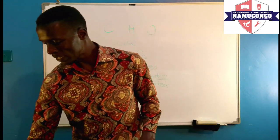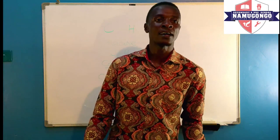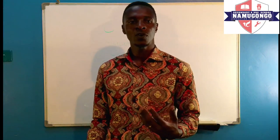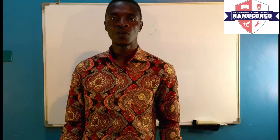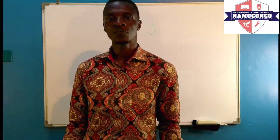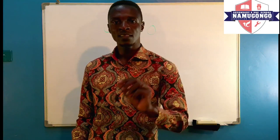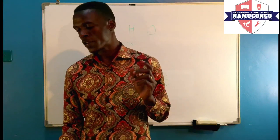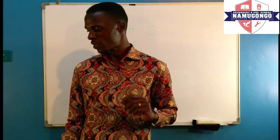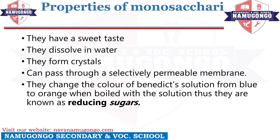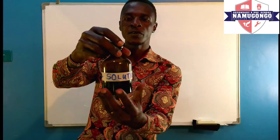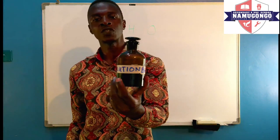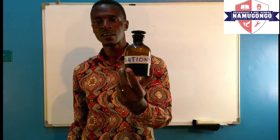Lastly, monosaccharides can change the color of Benedict's solution from blue to orange, and sometimes even to brown depending on the concentration of the sugars. Because they can change that color, we normally call them reducing sugars. Benedict's solution is the reagent used in the lab to test for the presence of reducing sugars.